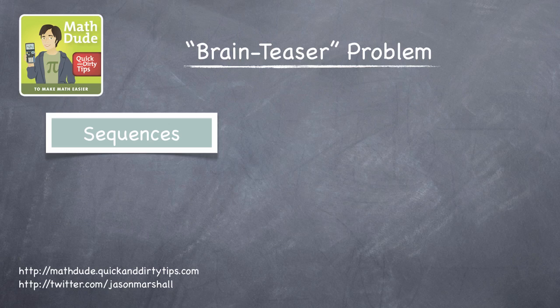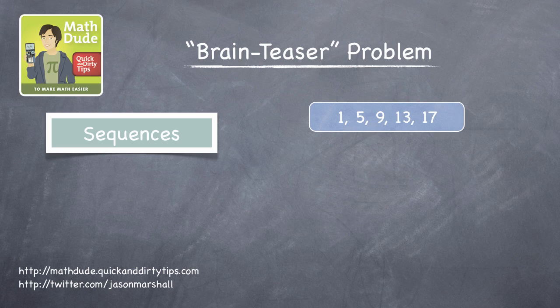As an example, let's figure out a way to more succinctly write the arithmetic sequence 1, 5, 9, 13, 17.